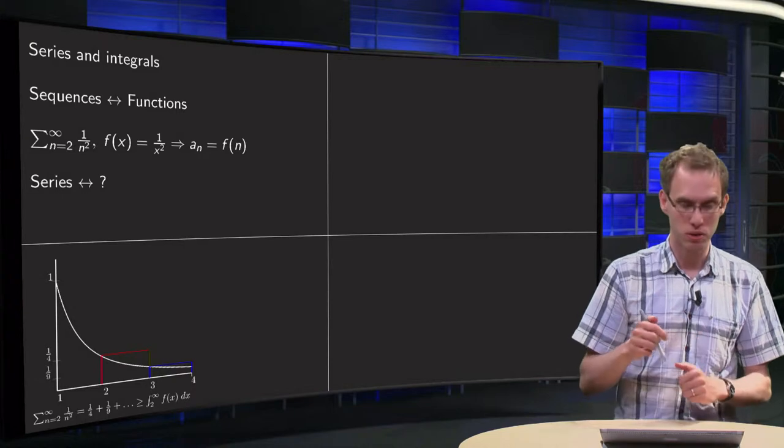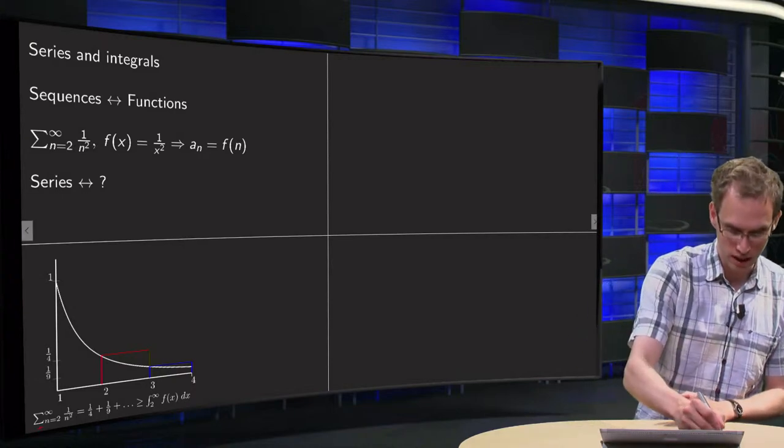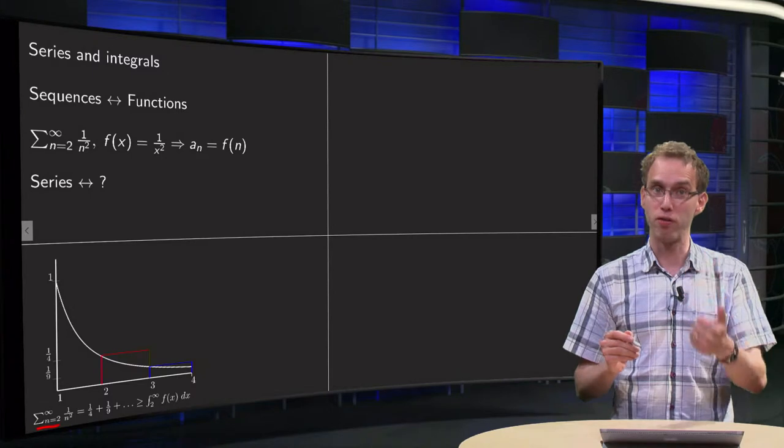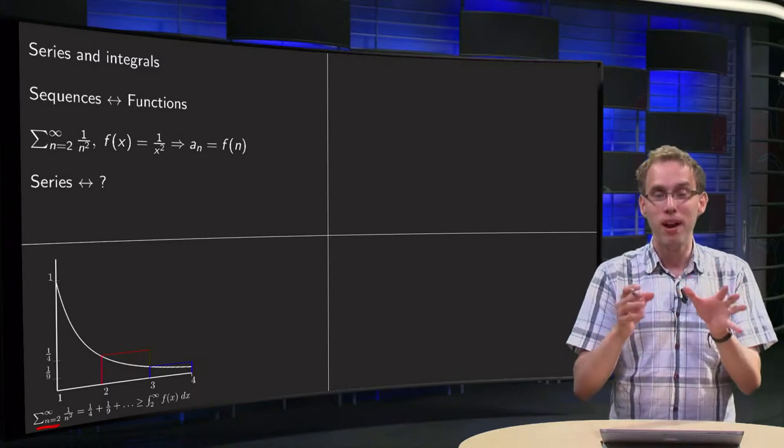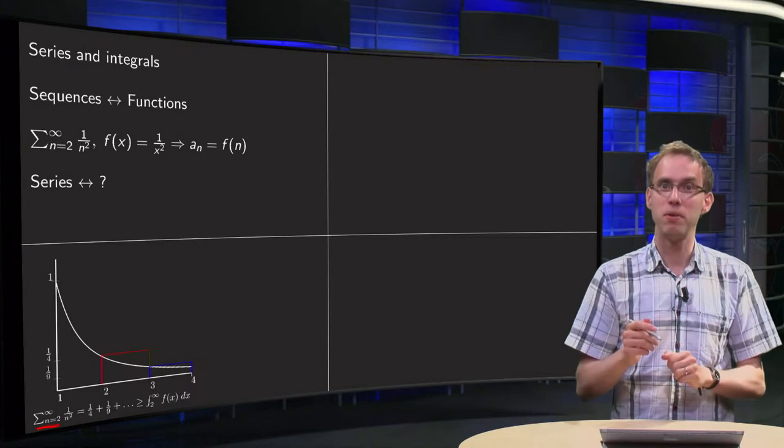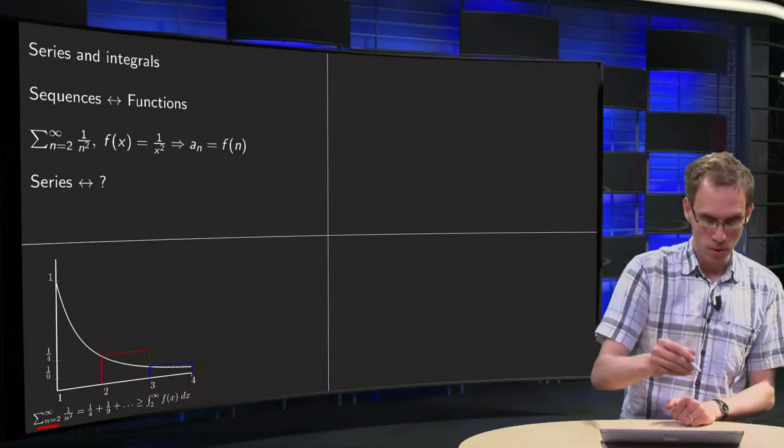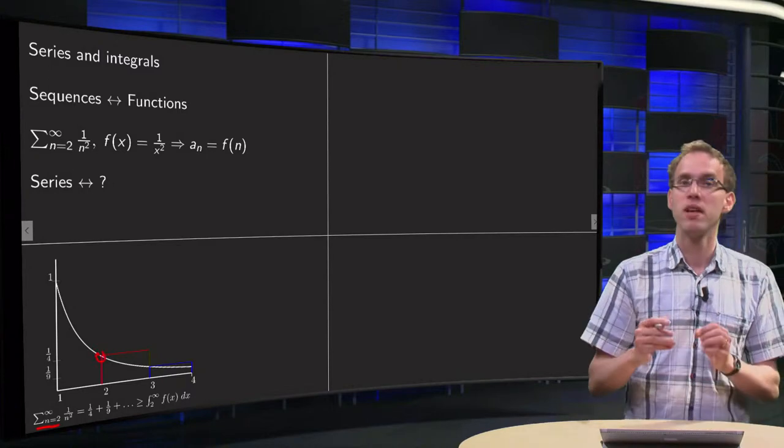And then, what happens if we want to add the terms starting at n equals 2? Well, then we have to add 1 over 4 plus 1 over 9, etc. Can I place those elements somewhere in the figure? Well, 1 over 4, the height is over here.